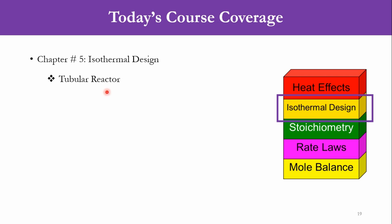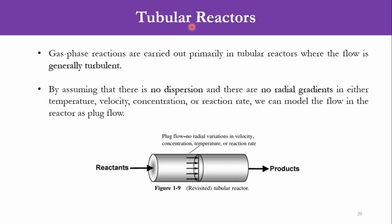In the tubular reactor, we will first derive some equations for liquid phase and gas phase systems, and then we will study some rules of thumb. Gas phase reactions are carried out primarily in tubular reactors where the flow is generally turbulent. We started tubular reactors or plug flow reactors in chapter number 1, and we have said that it is primarily used for gas phase systems.